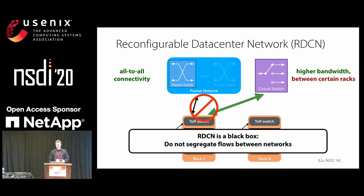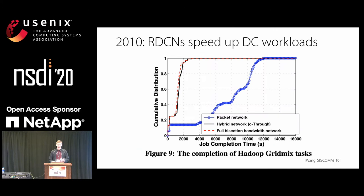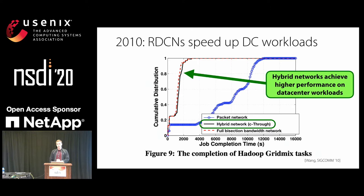10 years ago, when this research really kicked off, papers were able to prove that reconfigurable data center networks were able to really speed up data center workloads. This is a figure from the c-Through paper in SIGCOMM 2010, and compared to the blue line which is just the packet network, a hybrid network is able to achieve much lower flow completion times on this CDF graph.